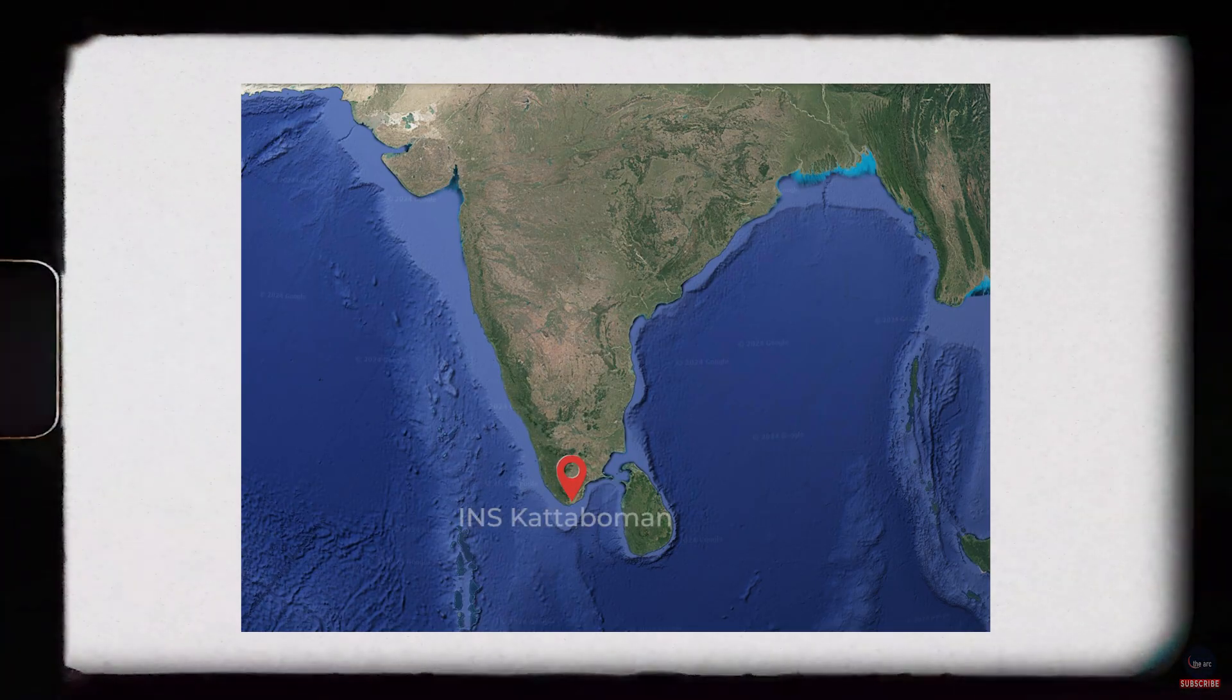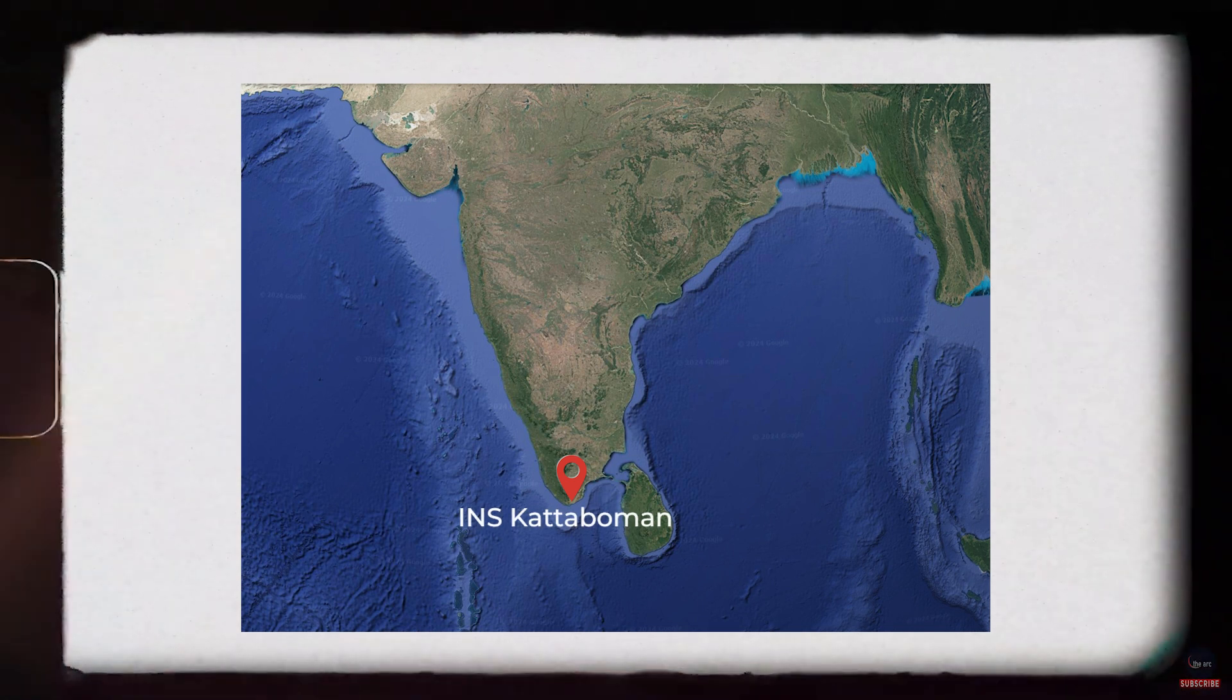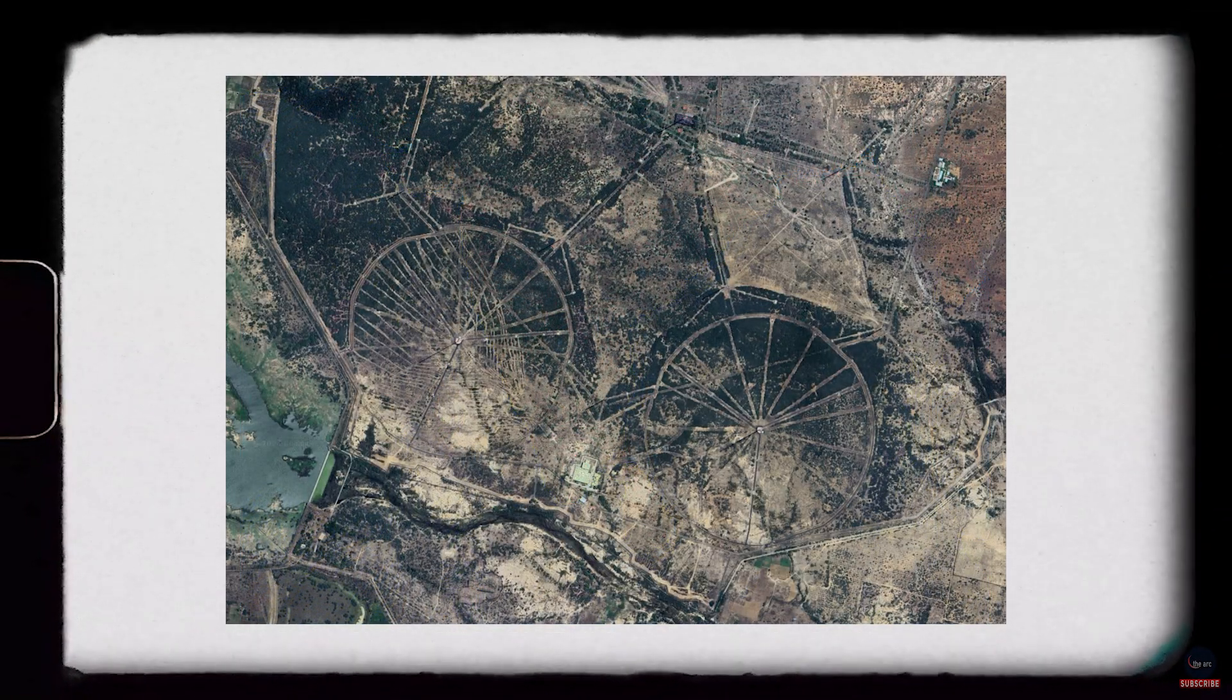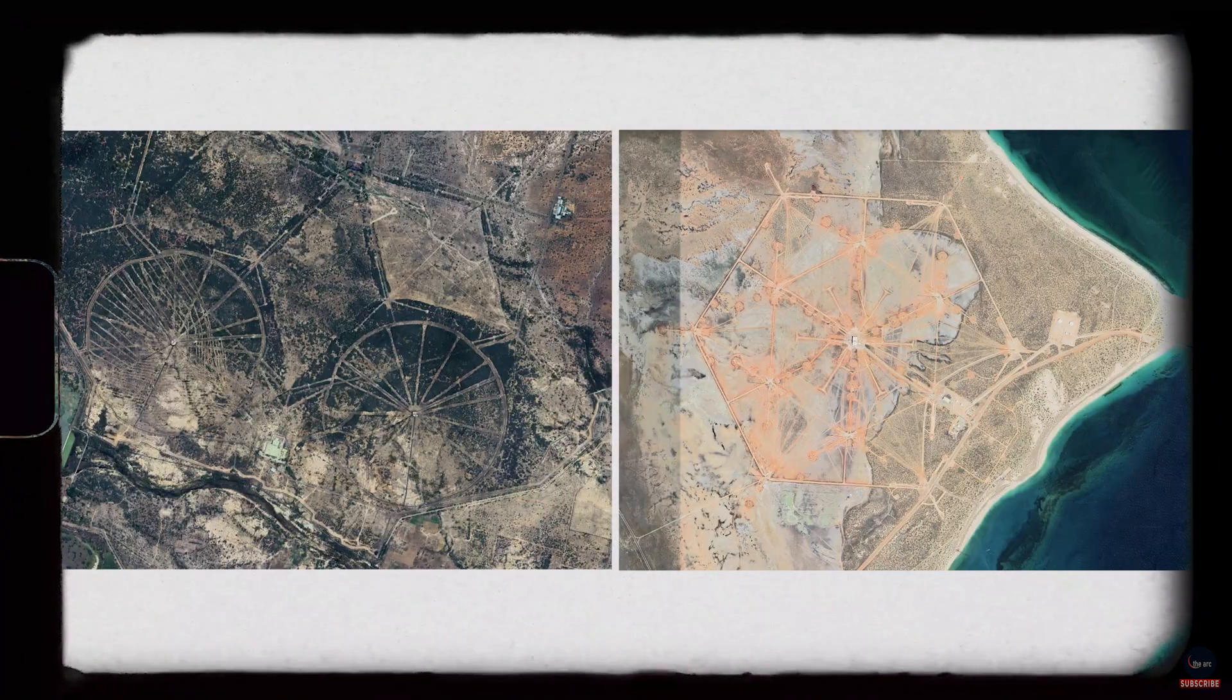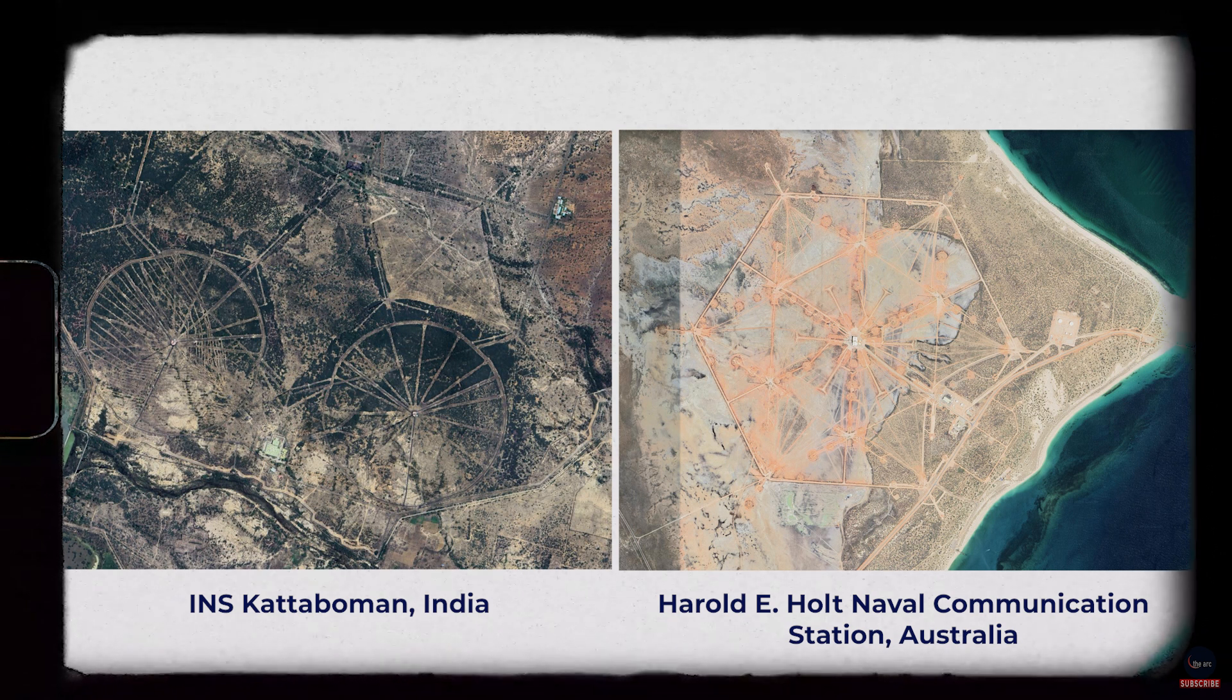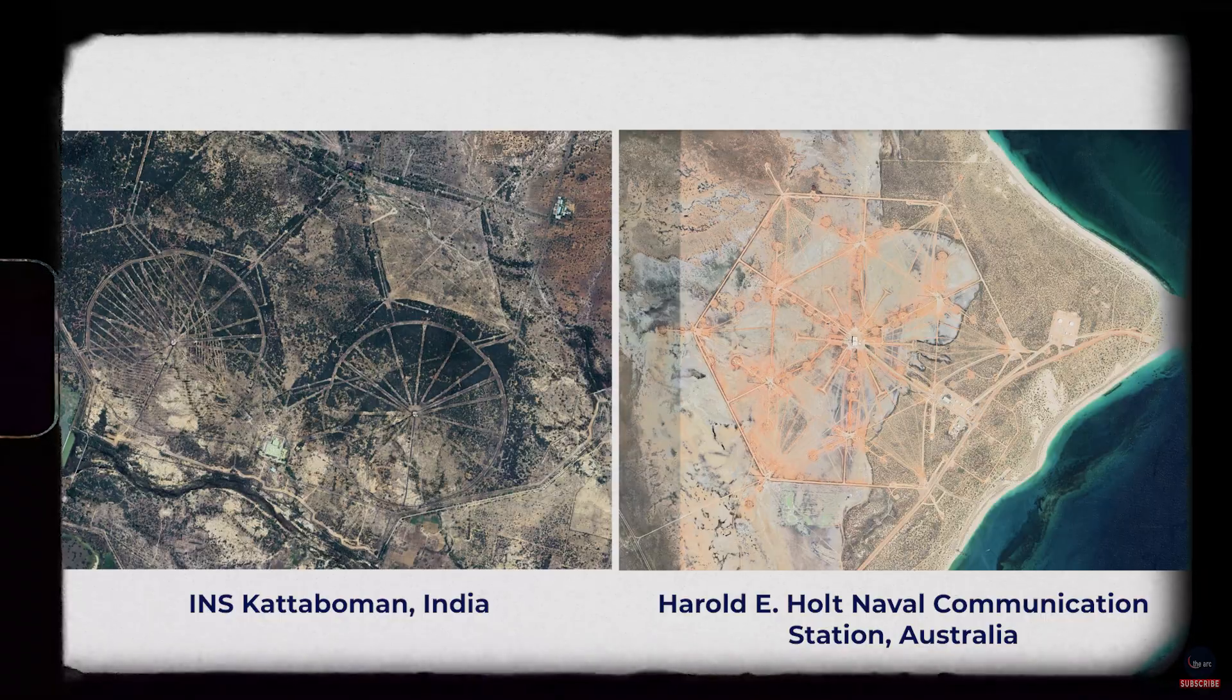There are not many VLF or ELF stations on earth. But India operates one at the INS Kattabomman naval base near Tirunel Valley in Tamil Nadu to communicate with its submarines. As you can see, all VLF stations look alike. On the left is India's INS Kattabomman. And on the right is Harold Holt Naval Communication Station in Australia. This station in Australia provides VLF radio transmission to the US Navy, Royal Australian Navy and Allied ships and submarines in the Western Pacific Ocean and the Eastern Indian Ocean. Now coming back to our discussion on the Damagundam Naval Station.